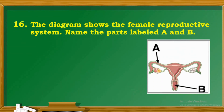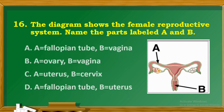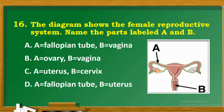Question 16: The diagram shows the female reproductive system. Name the parts labeled A and B. A. A: Fallopian tube, B: Vagina. B. A: Ovary, B: Vagina. C. A: Uterus, B: Cervix. D. A: Fallopian tube, B: Uterus.